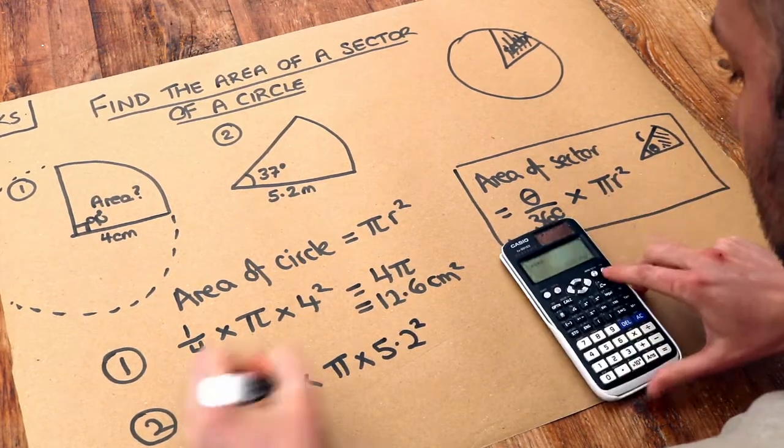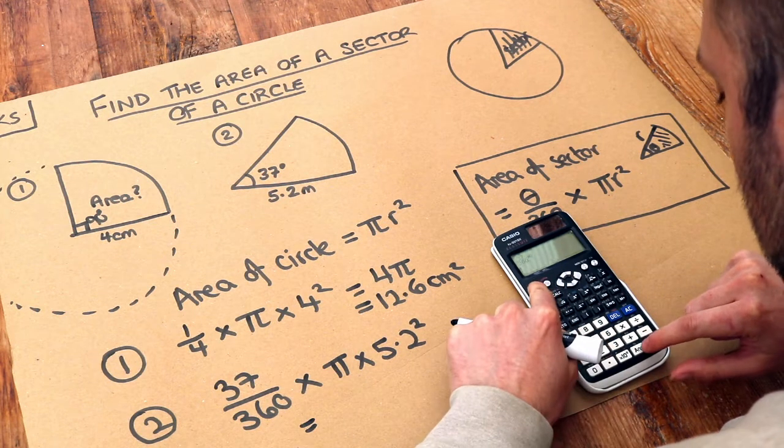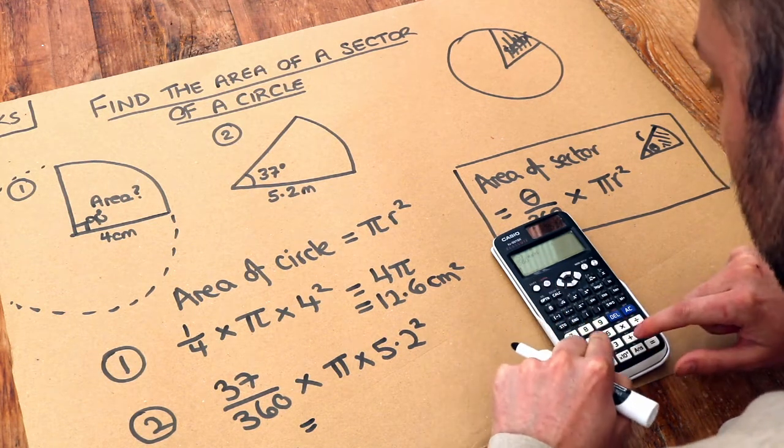And then if we put that in our calculator, 37 three-sixtieths of a circle, and we're doing that fraction of a full circle, so π times 5.2 squared.